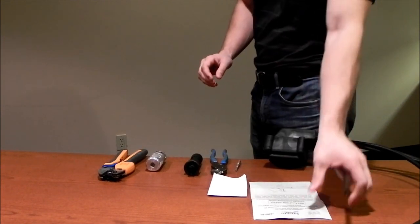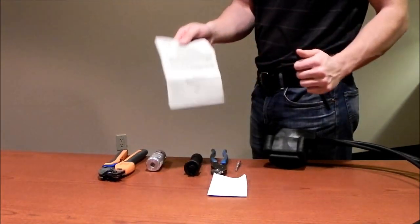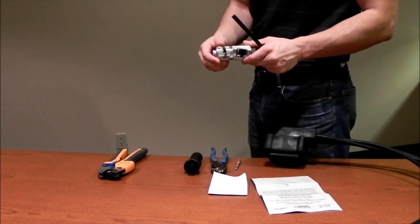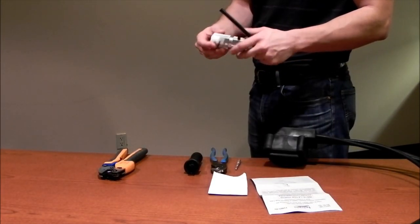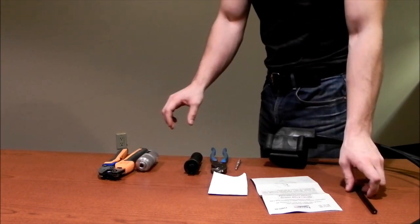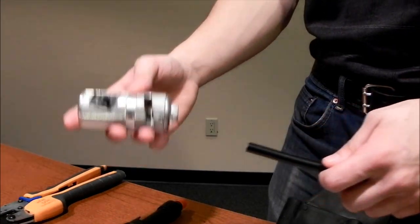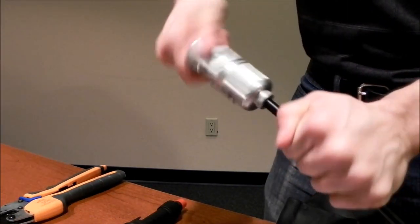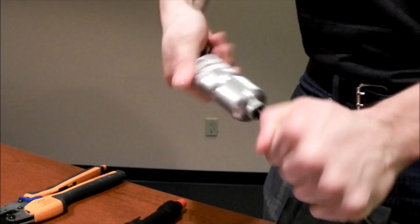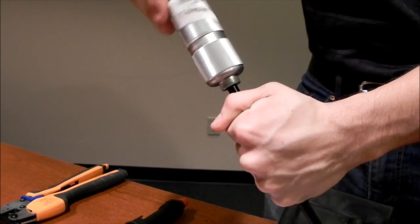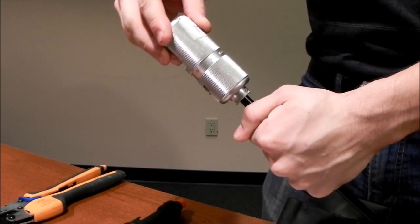The first step is to strip the cable as shown in the instruction manual. A wire stripping device may be used to facilitate this because it can be set to strip at the exact length required. Use the stripping side and turn as if sharpening a pencil. You can see the jacket start to peel away. Once it starts spinning freely, you've stripped the jacket enough.